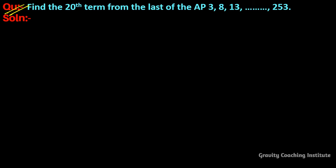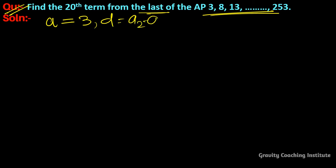Find the 20th term from the last of the AP: 3, 8, 13, ... 253. In this question, we need to find the 20th term from the last. Here, a is equal to 3 and d is equal to second term minus first term, 8 minus 3, equal to 5.